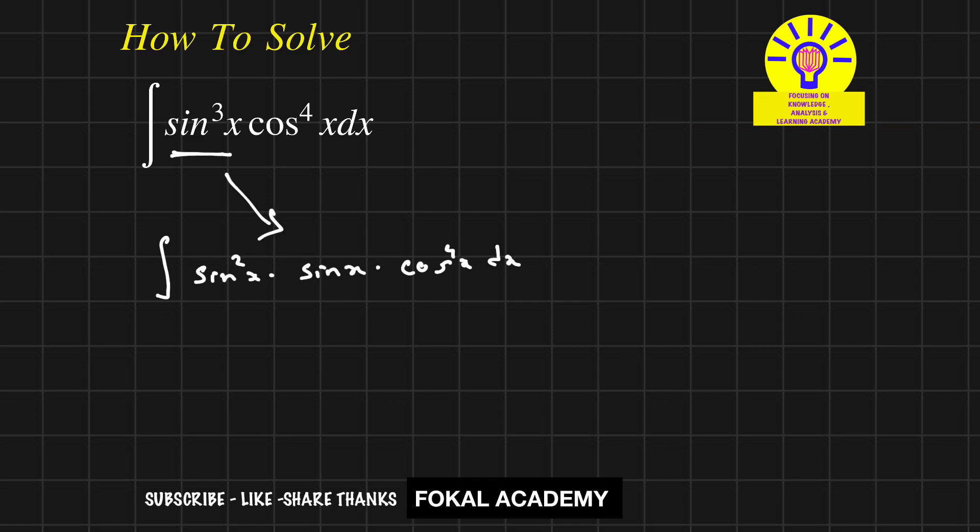But we know that from the identity sin²x + cos²x = 1, so from this sin²x can be written as 1 - cos²x.